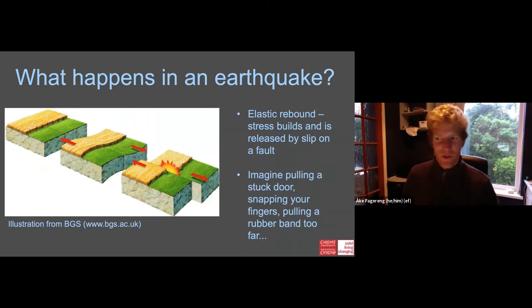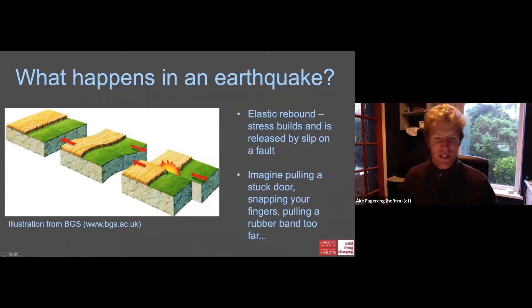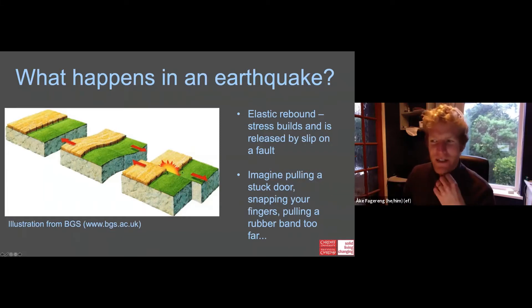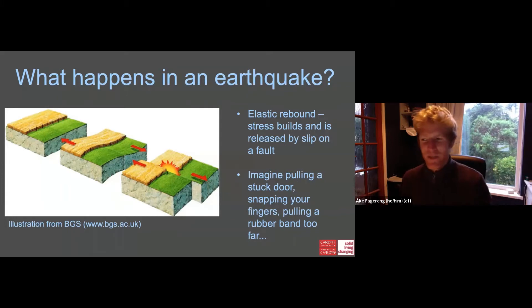This relates to elastic rebound. Looking at this series of cartoons: you have a fault going through an area, and over time the rocks on either side are dragged in opposite directions, creating stresses on the fault, until those stresses overcome the fault's strength. The fault slips quickly, and you have an earthquake. It's a bit like snapping your fingers — you pull them together, stress builds up, then it snaps and makes a sound wave, a bit like a seismic wave.